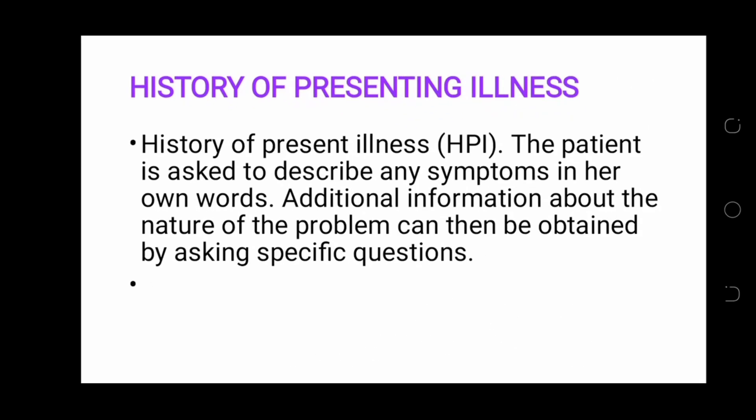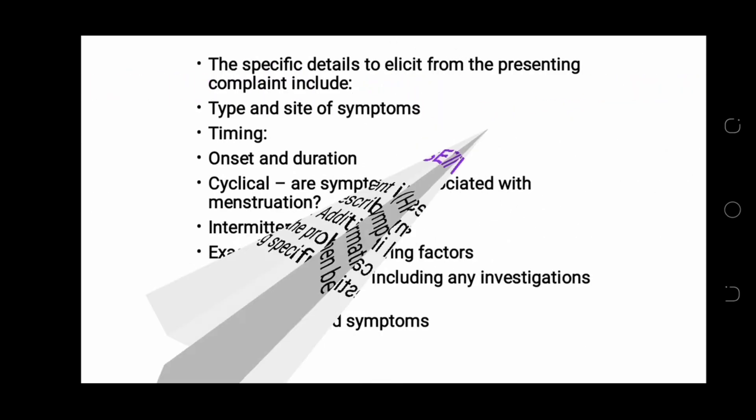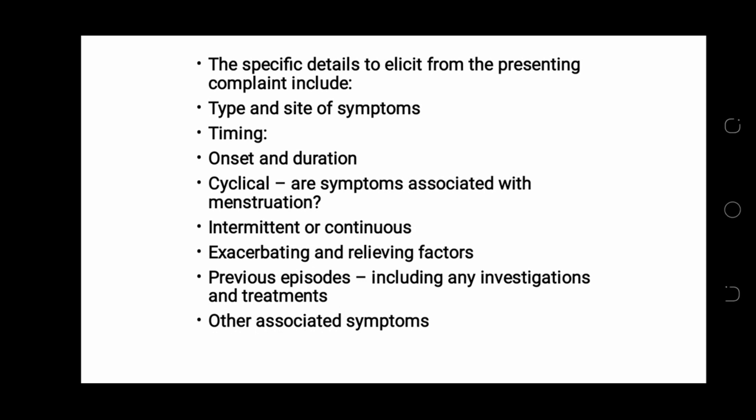In the history of presenting illness, the patient is asked to describe any symptom in her own words. Additional information about the nature of the problem can be obtained by asking specific questions. Specific details to elicit include type and site of symptoms, timing, onset and duration, cyclical or symptoms associated with menstruation, intermittent or continuous, exacerbating and relieving factors, previous episodes including any investigations and treatment, and other associated symptoms.